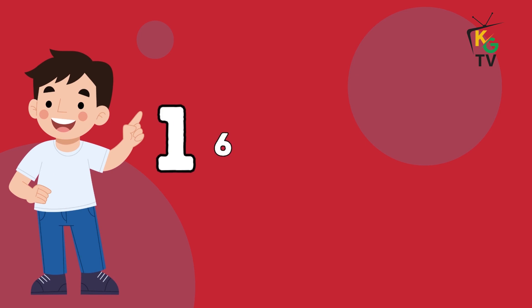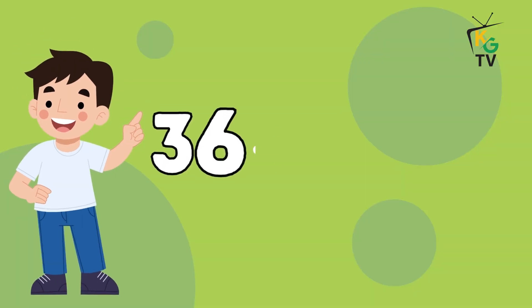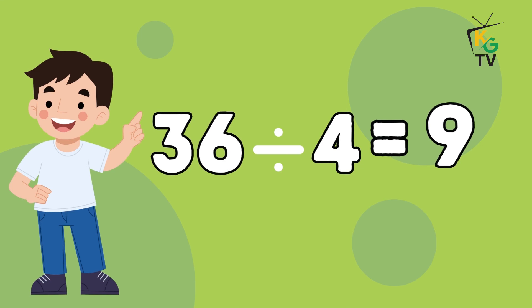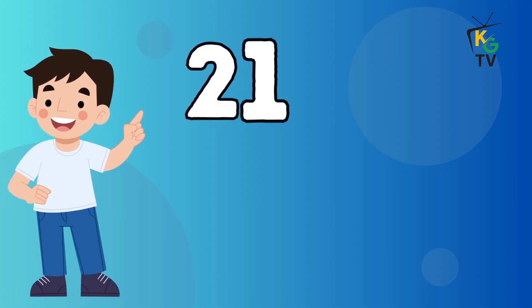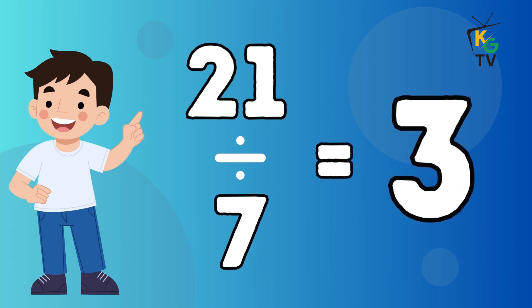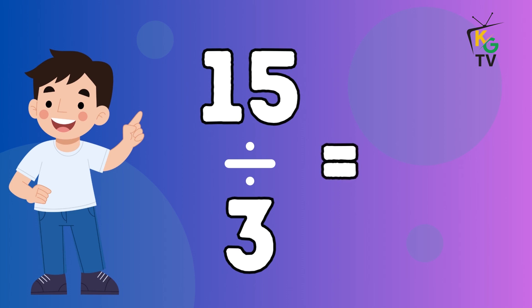16 divided by 4 is equal to 4. 36 divided by 4 is equal to 9. 21 divided by 7 is equal to 3. 15 divided by 3 is equal to 5.